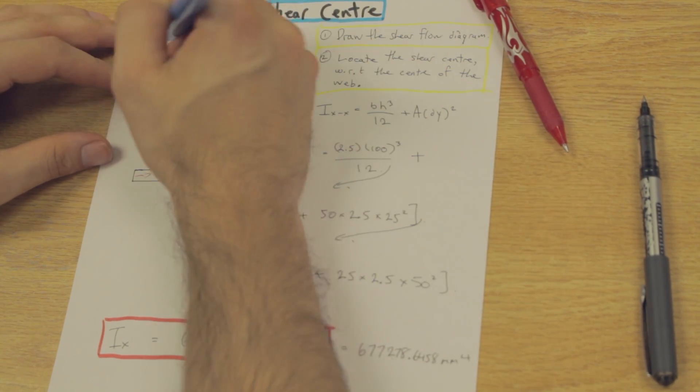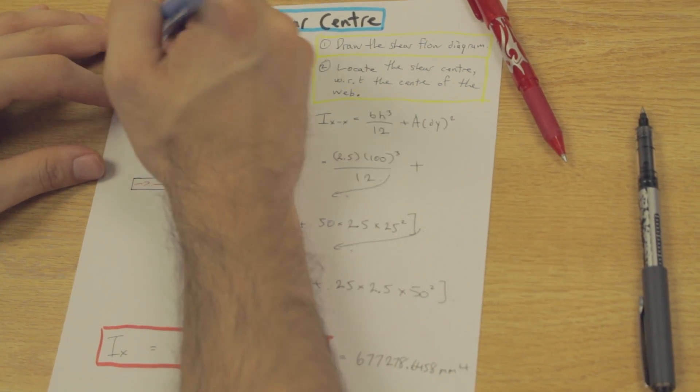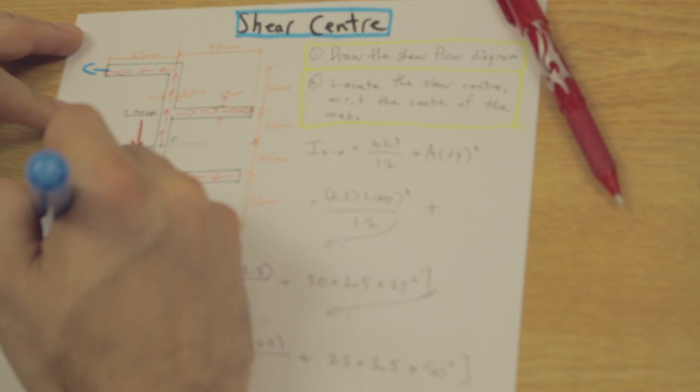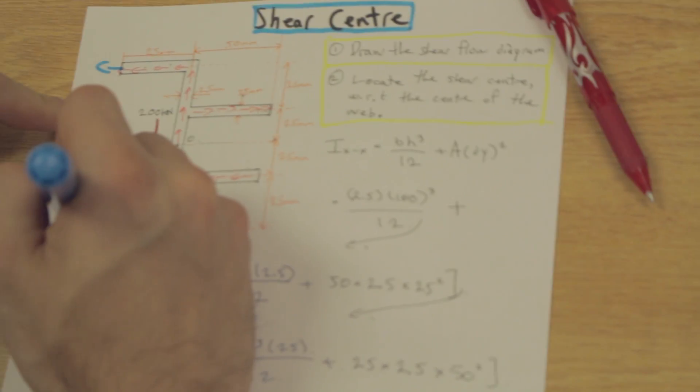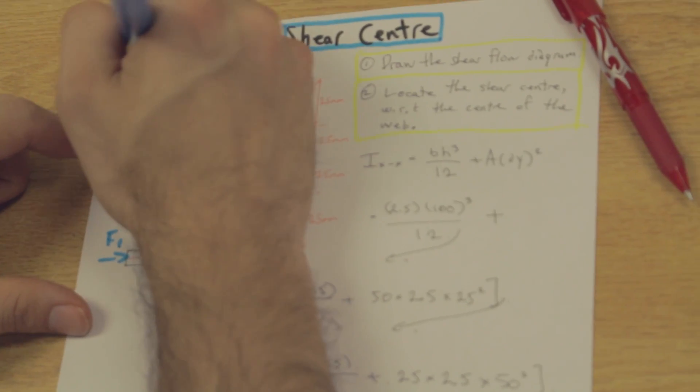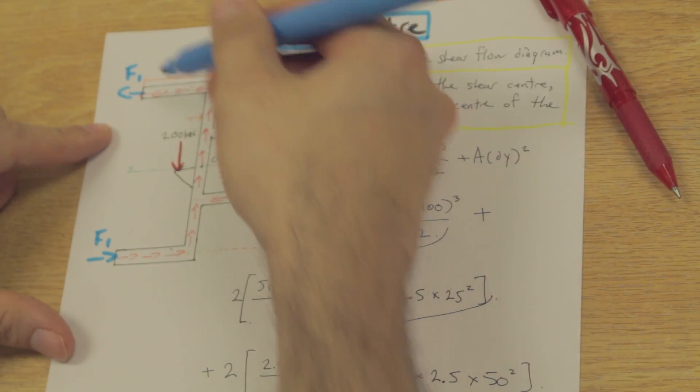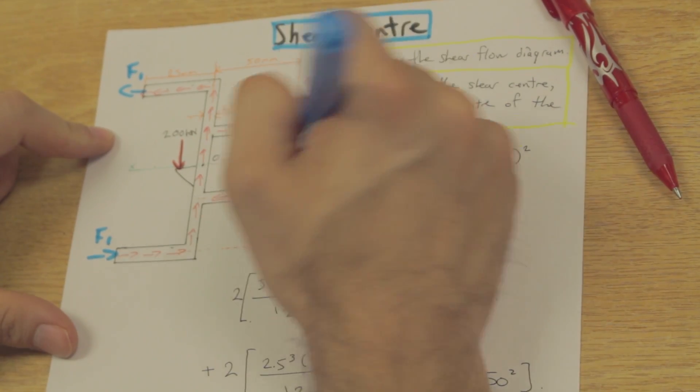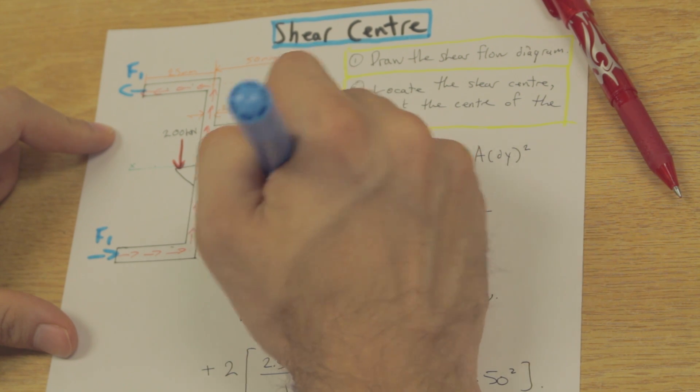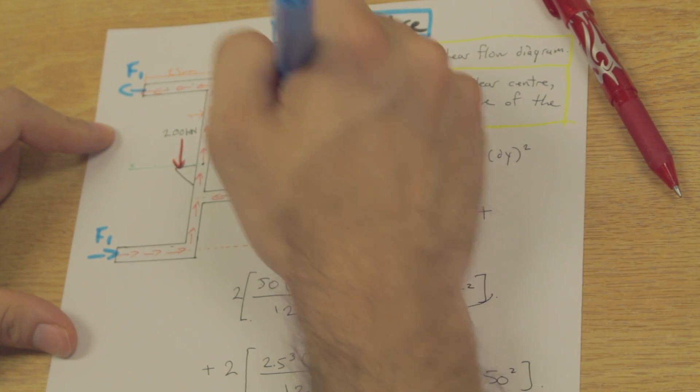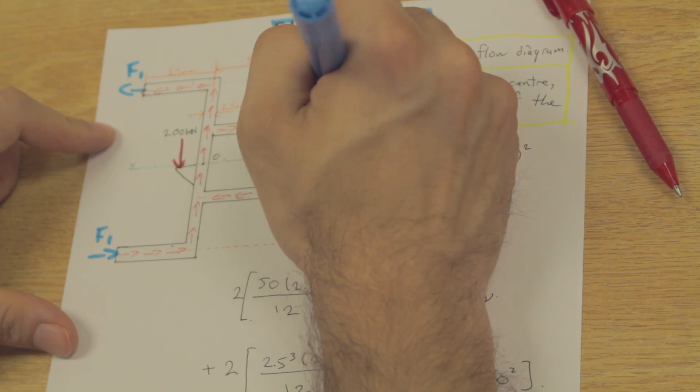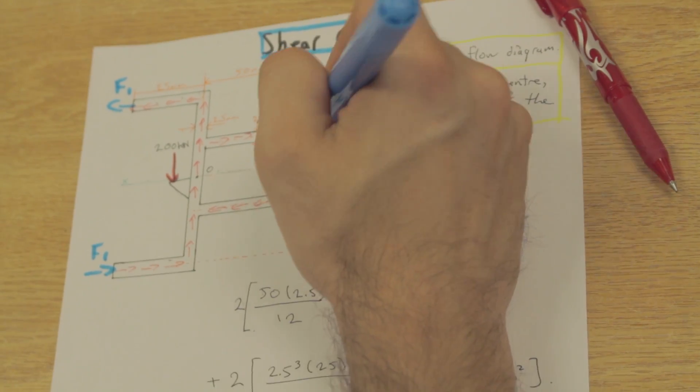And these two forces acting with a perpendicular distance are going to create a couple moment. And we have F2, and these are going to create a couple moment here.